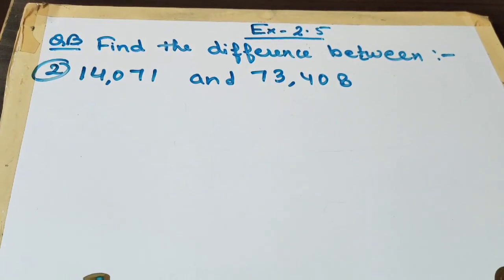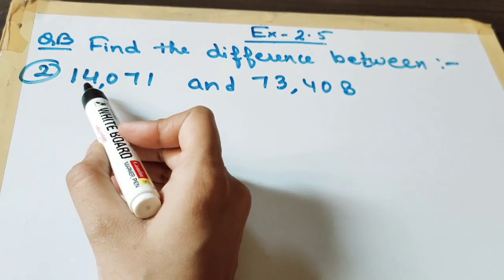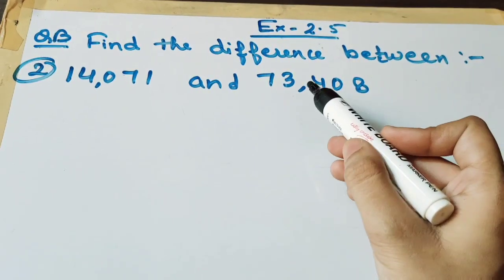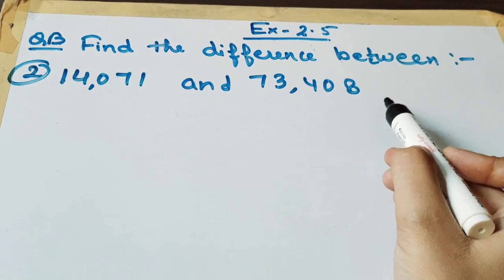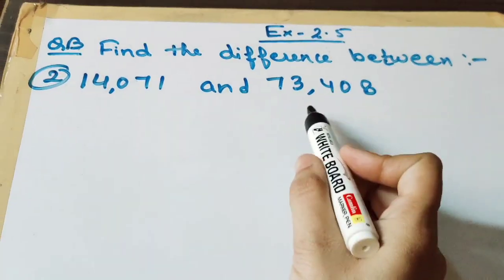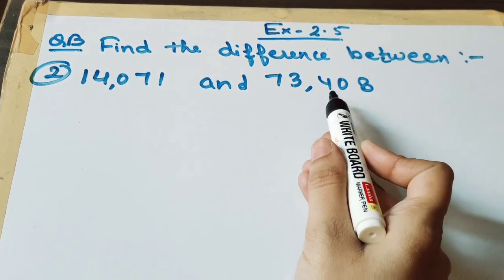Now understand the second question. Now first number is 14,071. And second number is 73,408. Now tell me which is the bigger one? Which is greatest number? This one. Right. So this will be the minuend.